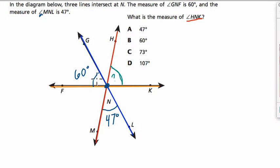Okay, what can we do? Well, I want to use what's called vertical angles. This angle right here, where KNL is equal to GNF. That's 60 degrees, right? There are two vertical angles.